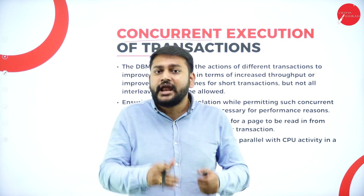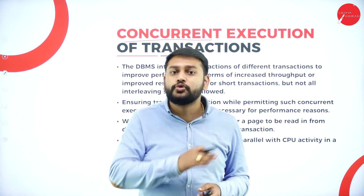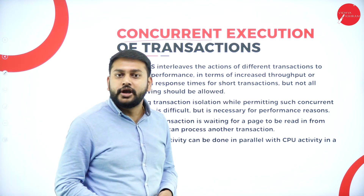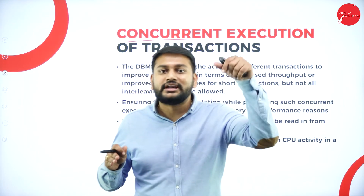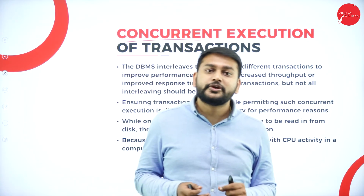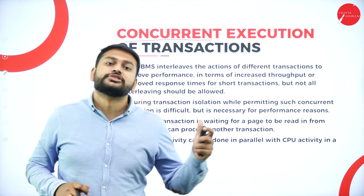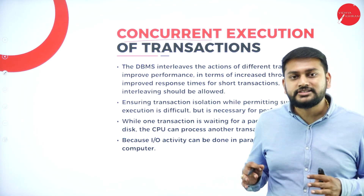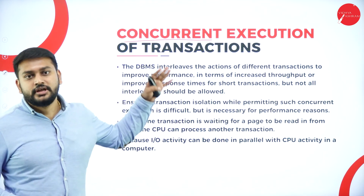Each transaction will take a different amount of time for its execution. Imagine transaction number one will take two minutes, transaction number two will take seven minutes, and transaction number three might take only one minute. So what should transaction number three do while transaction two is executing for seven minutes? What we do is: whenever an input-output operation is required during the execution of any transaction, the processor will be free so it can take up any other transaction in the queue. This saves a lot of time and helps us execute tasks concurrently.